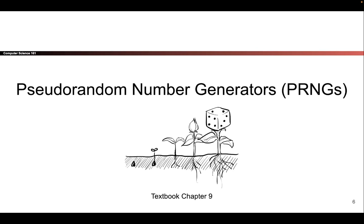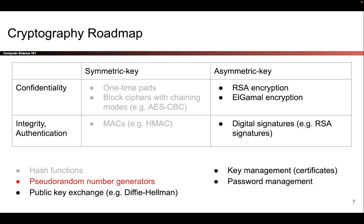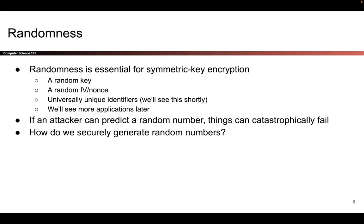Let's start today by talking about randomness. In our cryptography roadmap, we're not talking about a scheme that provides confidentiality or integrity, but we still have to talk about randomness because it is an important building block to a lot of the schemes that we've been studying. You've already seen randomness in lots of the schemes that we have built — to encrypt things and to compute MACs, we needed a random key, and in our encryption schemes, we needed a random IV or nonce for each encryption. There are also other applications of randomness that we'll see later today.